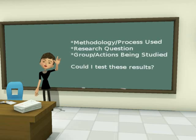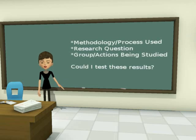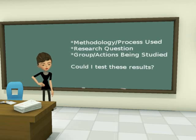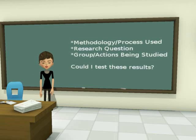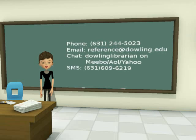Look for a description of methodology or process used, a stated research question, and a definition of the group or actions being studied. Also ask yourself: could I repeat this study and get the same results? If yes, you've found an empirical study. If you have questions, contact us.